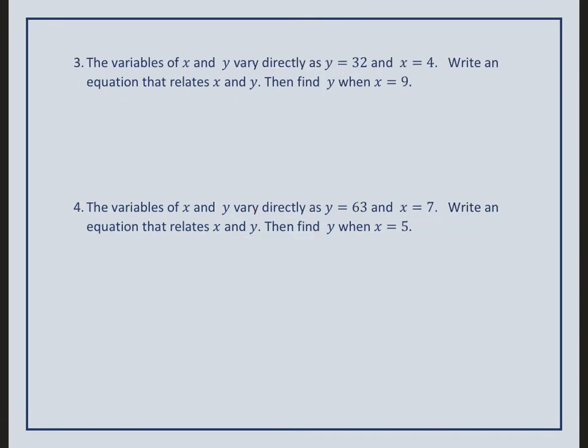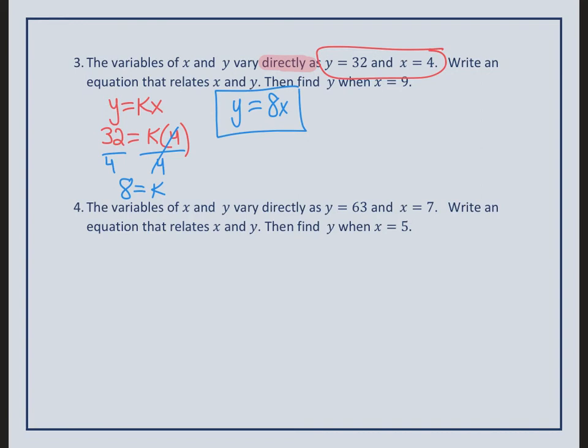We're going to do exactly the same thing, but when we start looking at this one, a key word that should pop out to you is the word directly. And when you see directly, you should write down the equation of y equals kx. And what we know so far is that 32 is equal to k times 4. So how do I solve for k? Well, divide by 4 on both sides. My k value is 8. So a direct variation problem would be y equals 8x. So here is the equation. And now it wants us to find y when x equals 9. So we're going to plug a 9 into the x value, and 8 times 9 is 72. And this is your final answer.